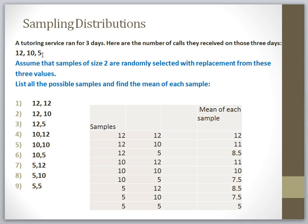Sometimes populations can be very small. For example, let's say you just held a small conference and you invited just 20 people — the population of that conference is those 20 people. So depending on how you define your population, that's how you know how large it is and what kind of samples you want to take. In this example, we just have a tutoring service that only runs for three days — they pop in right before final exams to help people — and they record the number of calls they receive on each of those three days.